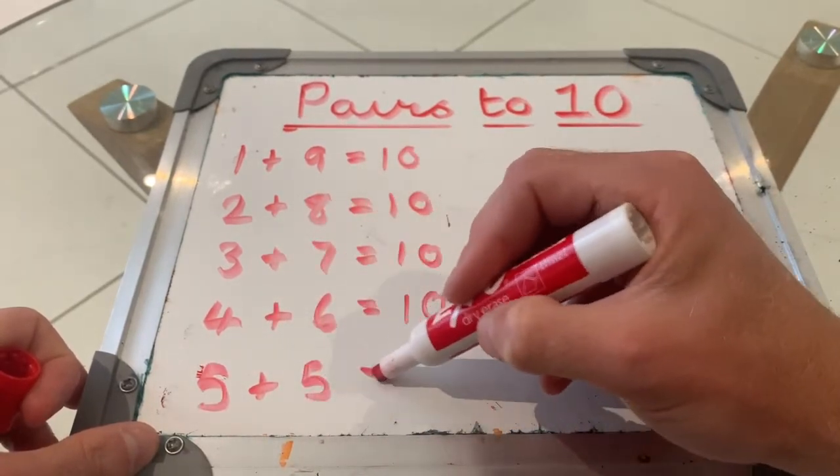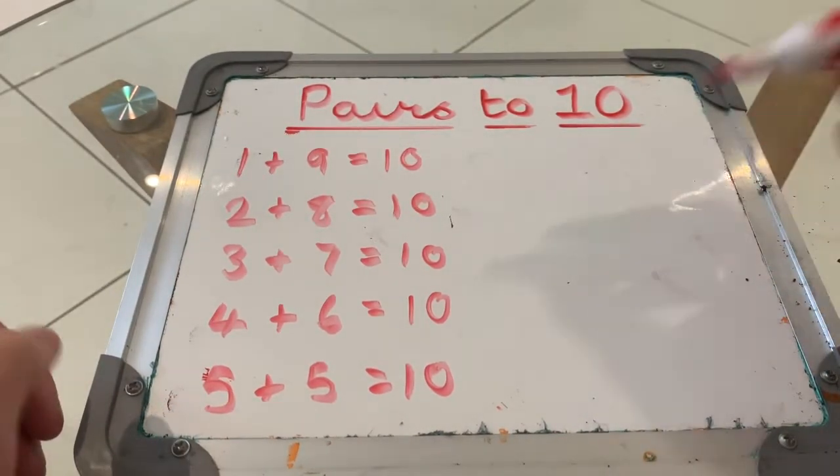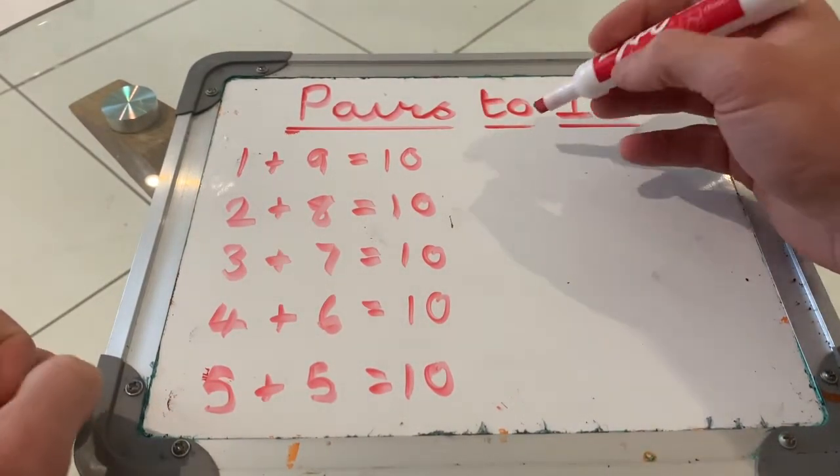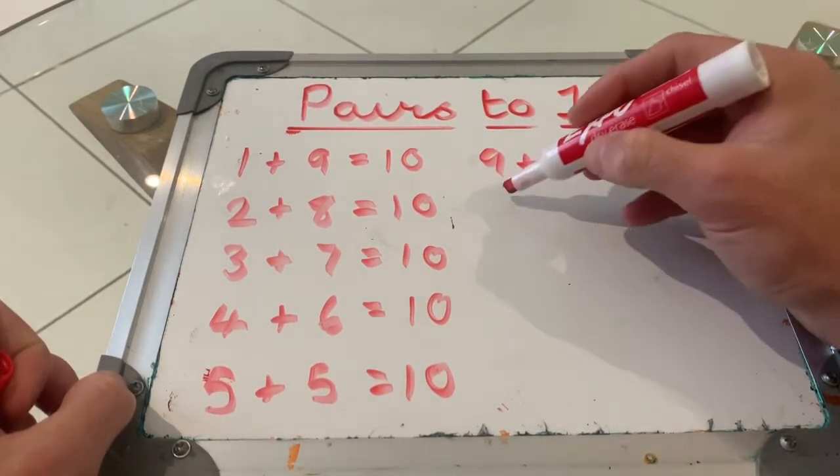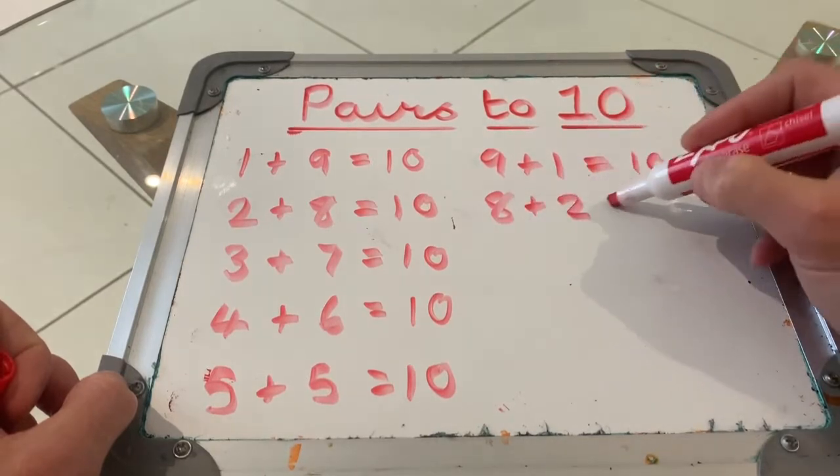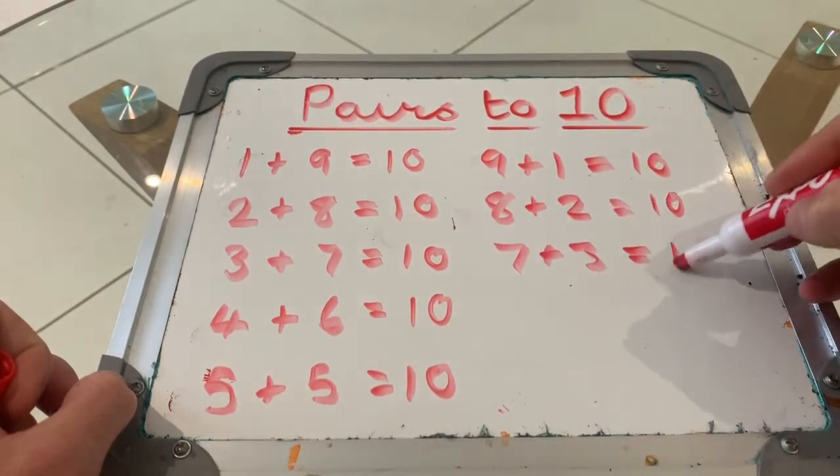And then you can create the other facts by reversing your previous ones. So 9 and 1 make 10. 8 and 2 make 10. 7 and 3 make 10.